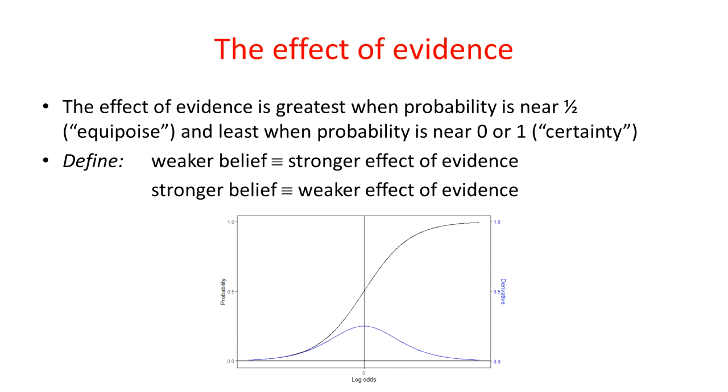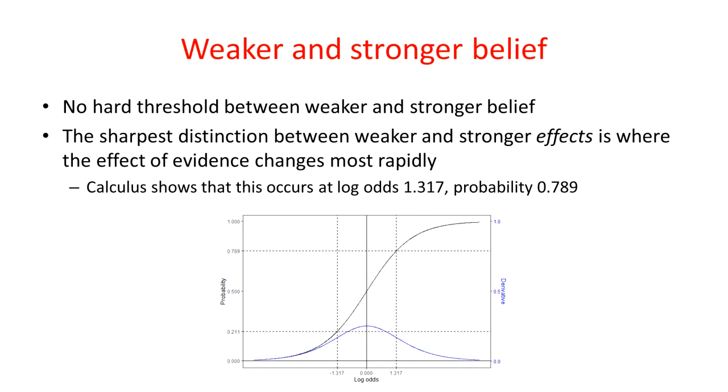So we can make that a definition. Weaker belief is where there are stronger effects of evidence. Stronger belief is where there are weaker effects of evidence. Ideally, there might be a hard threshold between weaker and stronger belief, but we can't get that because the effect of evidence is changing continuously.